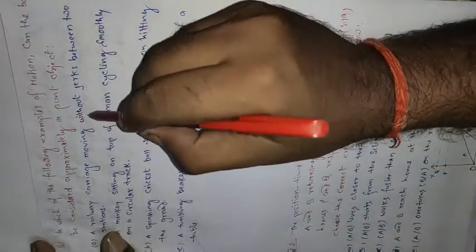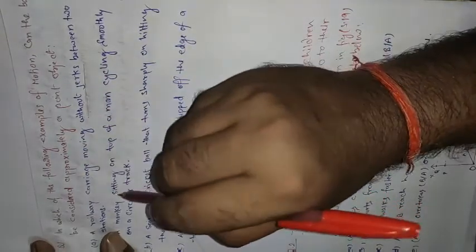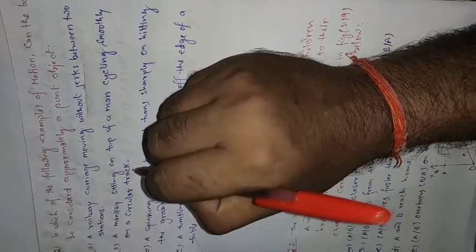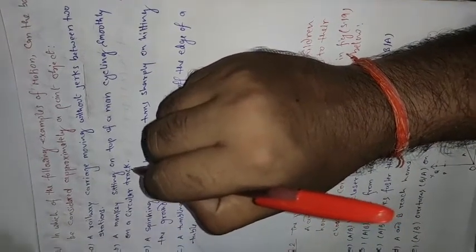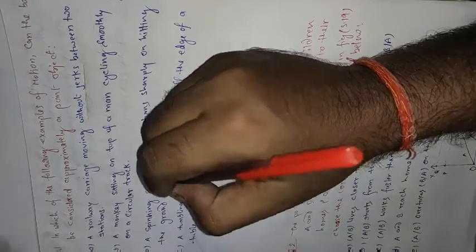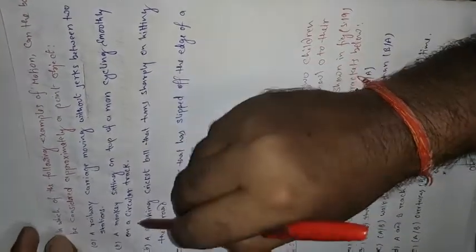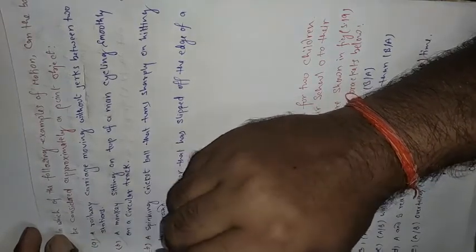It is mentioned here 'without jerking,' which means it is not taking any type of jerk. If it were to take a jerk, then vertical motion would start, and that would be a different kind of motion than linear or translatory motion. So we will consider it as a point object.